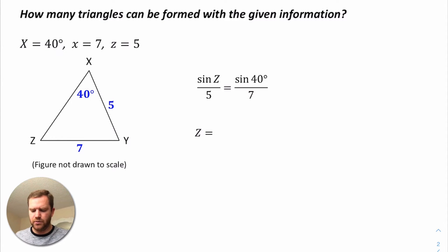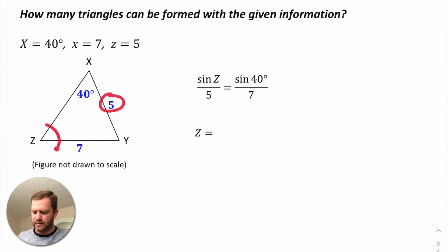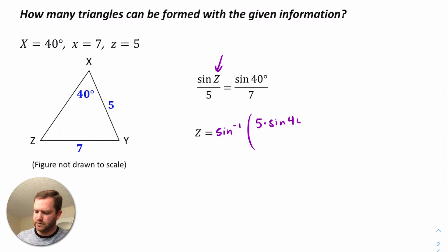We know that in order to use the law of sines we need an angle-side pair, which we have here. Since we're given information about side Z, we want to find the measure of angle Z first. To isolate Z we need to multiply both sides by 5 and then take the inverse sine. So we're going to have inverse sine of 5 times the sine of 40 degrees, all divided by 7.